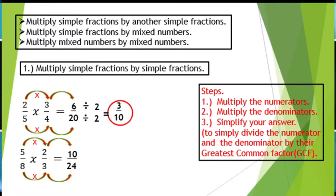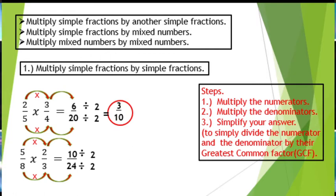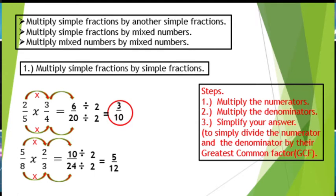Again, 10 over 24 is not in simplest form. We need to divide the numerator 10 and the denominator 24 by their GCF. The GCF is 2. So, we have 10 divided by 2 is 5, and 24 divided by 2 is 12. Therefore, our final answer is 5 over 12.